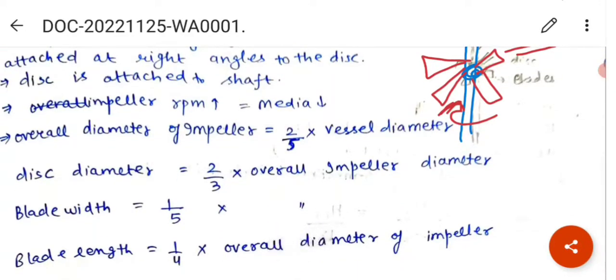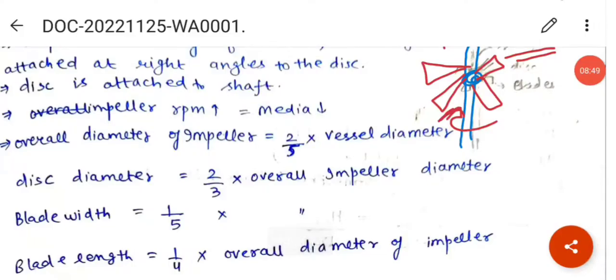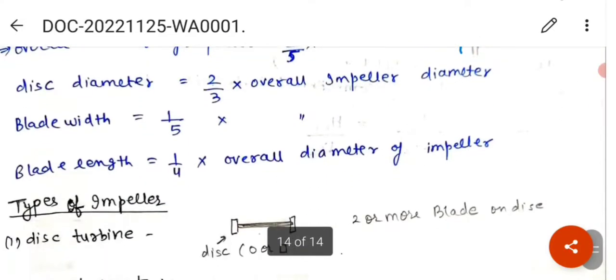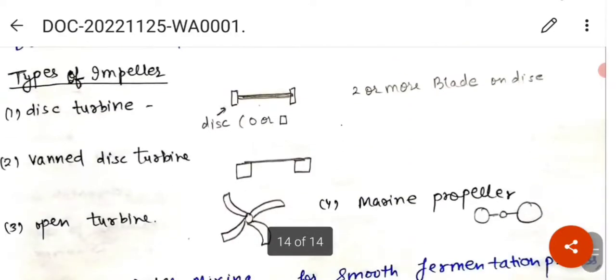The impeller RPM is revolution per minute. For impeller RPM high, medium is low. The impeller diameter is equal to 2 by 5th of the vessel diameter. Disc diameter is equal to 2 by 3rd of the overall impeller diameter. Blade width is equal to 1 by 5th of the overall impeller diameter. Blade length is equal to 1 by 4th of the overall diameter of the impeller.